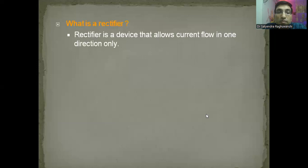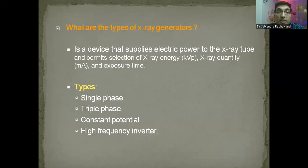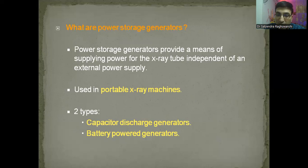They might ask what is a rectifier. A rectifier is a device which rectifies alternating current to direct current — AC to DC current. Remember this much; this is more than enough. What are the various types of x-ray generators? Single phase, triple phase, constant voltage, high frequency generator, power storage generators, capacitor, and battery operated. Only names are enough — nothing more than this is required.